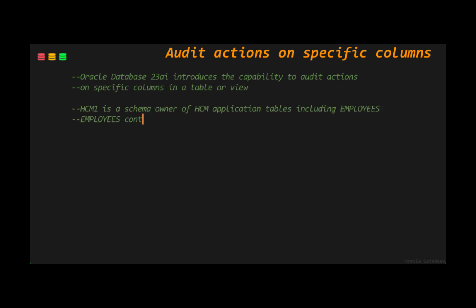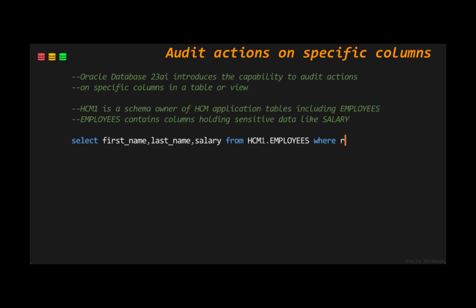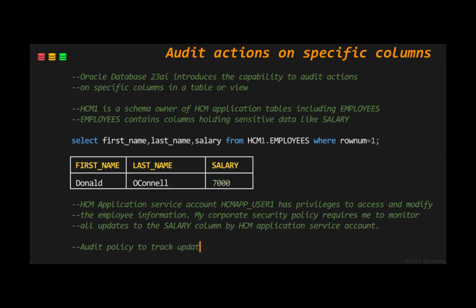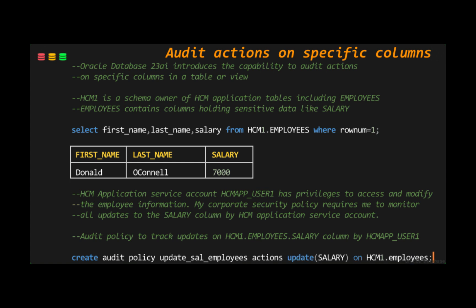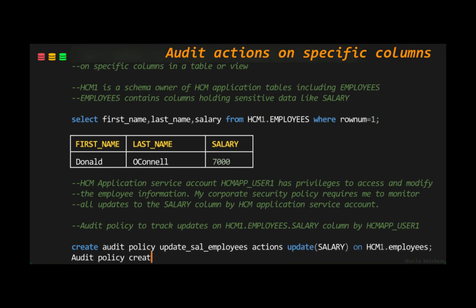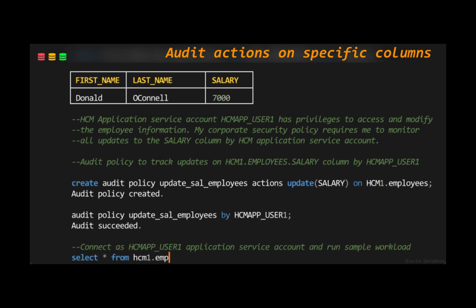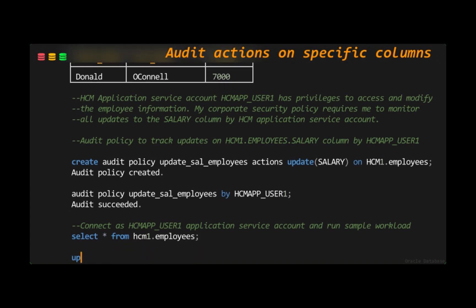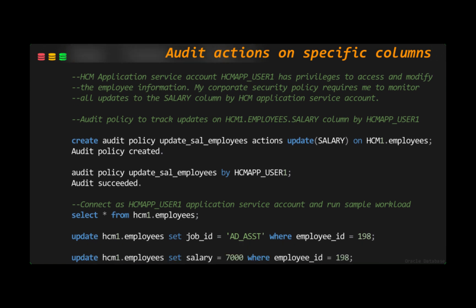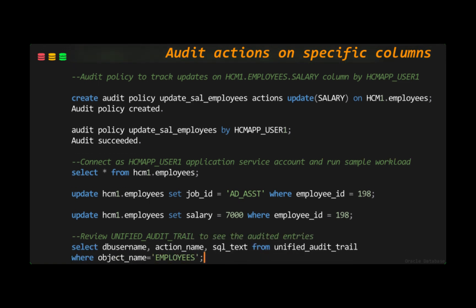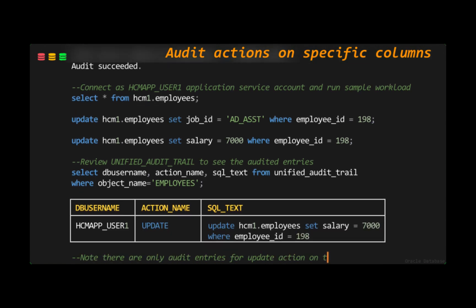Now let's look at a demo of configuring an audit policy to audit specific columns in a table. We have an employees table in the HCM application schema which has salary as one of the columns holding sensitive data. The HCM application service account has privileges to access and modify salaries, so there is a requirement to monitor updates to it. We create an audit policy to monitor update statements to the salary column and enforce it on the application service account. In the unified audit trail, you will only see update statements to the salary column — none of the other SQL statements in the workload are captured, improving precision.